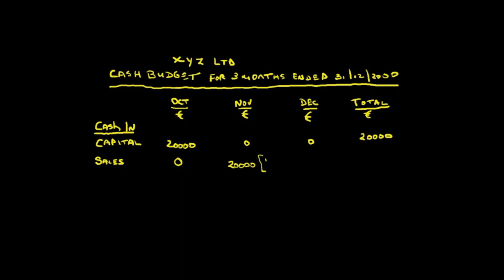How do we calculate that? It's 1,000 units multiplied by 20 euros — that's how we get the 20,000. Those are the sales of October. And what will the sales in November be? We're going to sell 2,000 items for 20 euros each — that's 40,000. But when we sell them in November, the customers will expect credit, so they won't pay us, if we're lucky, till December. So they're going to pay us 40,000 in December — that's 2,000 units multiplied by 20 euros.